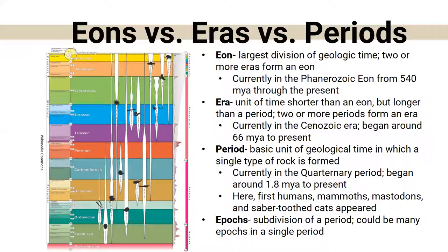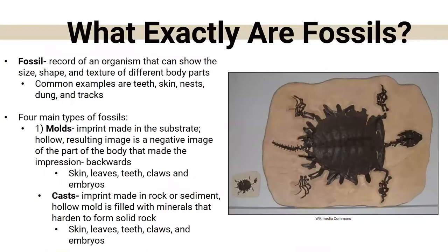In the Quaternary period we can date things and know a lot: the first humans came about, first mammoths, mastodons, and saber-tooth cats appeared. An epoch is just a subdivision of a period — there are lots of different epochs sometimes within a single period. There will not be a quiz on this — it's just so you know what we're talking about.